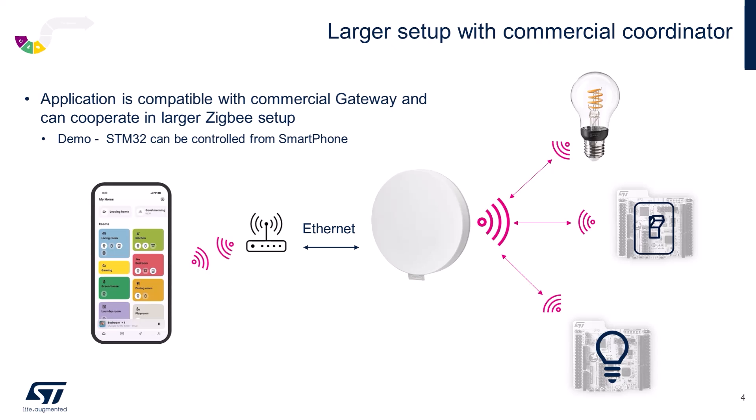As the IKEA gateway scans for devices, you should see traces appear on your terminal window. These traces help you monitor the pairing process, providing real-time feedback on whether the STM32WB55 has been discovered by the gateway. The traces will show communication between the STM32WB55 and the gateway, allowing you to confirm that the device is being identified correctly. Once the device is found, the app will display it as an available device, and you can complete the pairing process by following the on-screen instructions. The STM32WB55 will now be part of your Zigbee network, controllable through the IKEA Home Smart app just like any other IKEA Smart product.